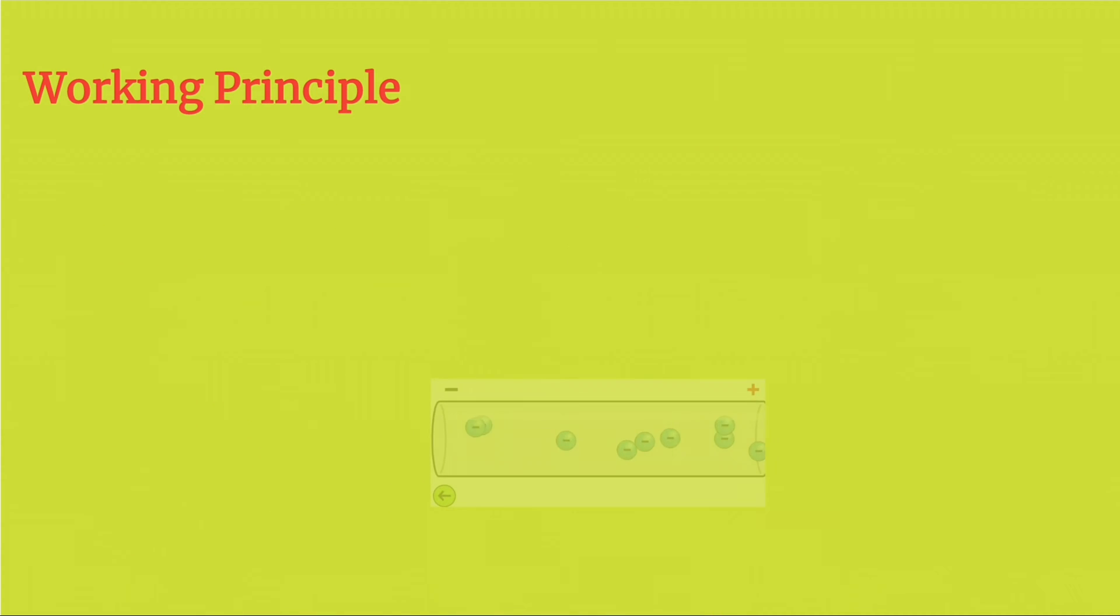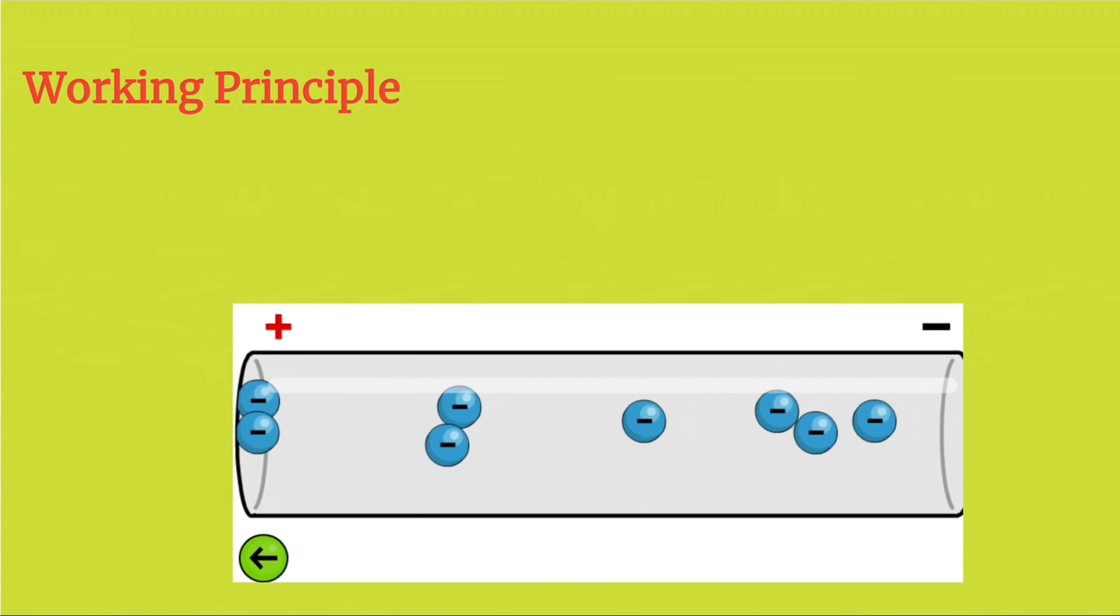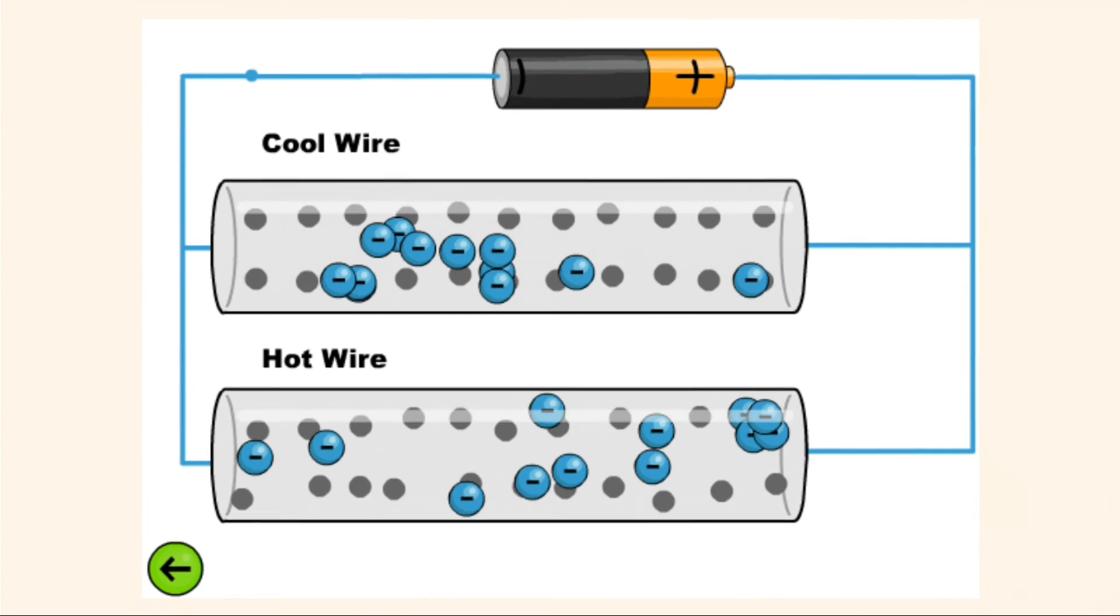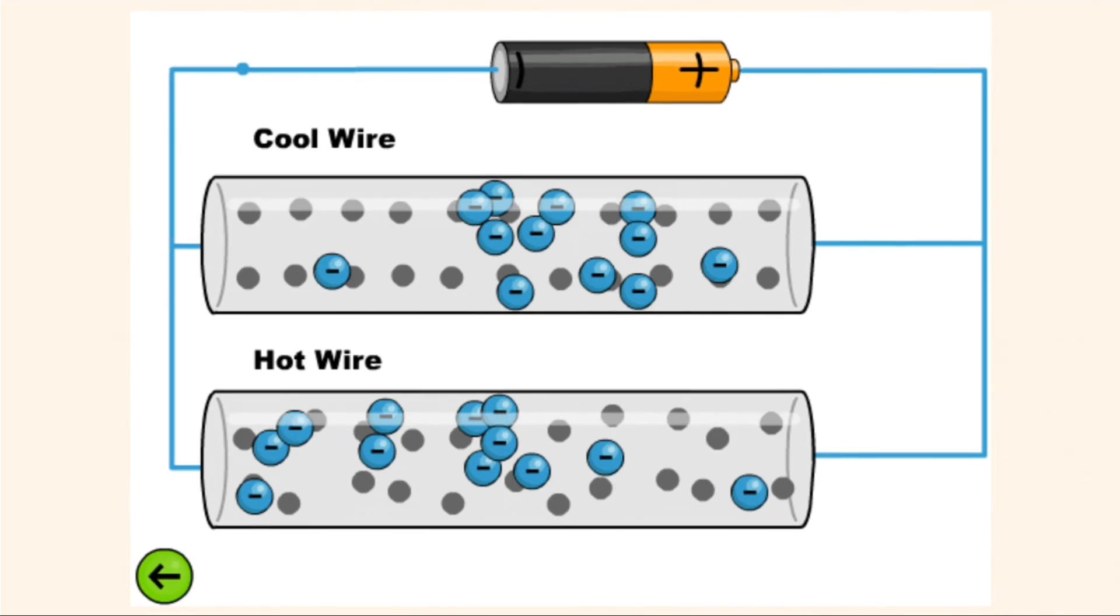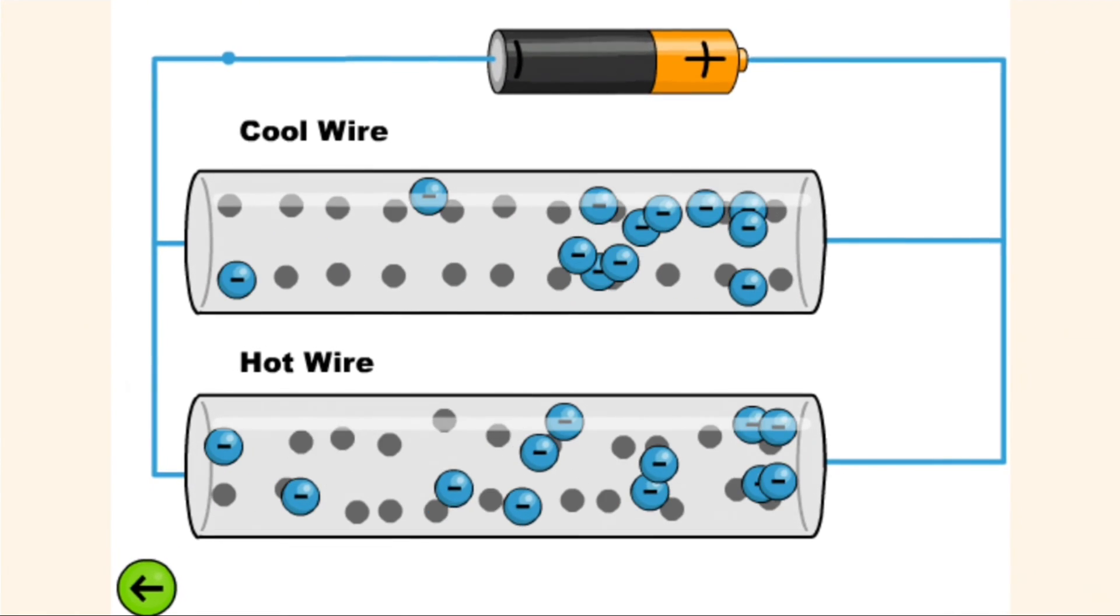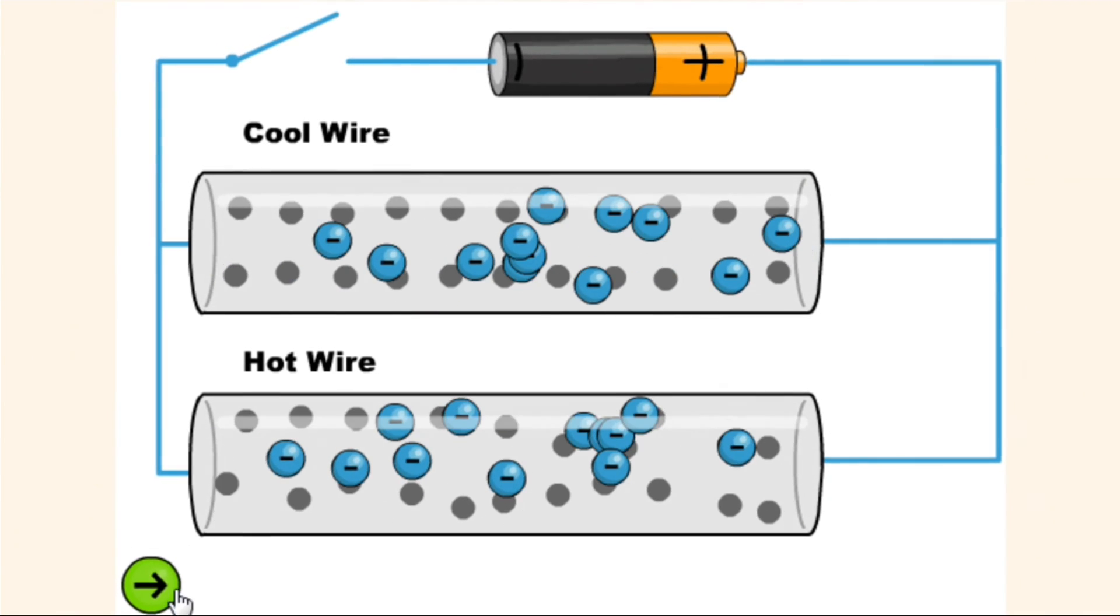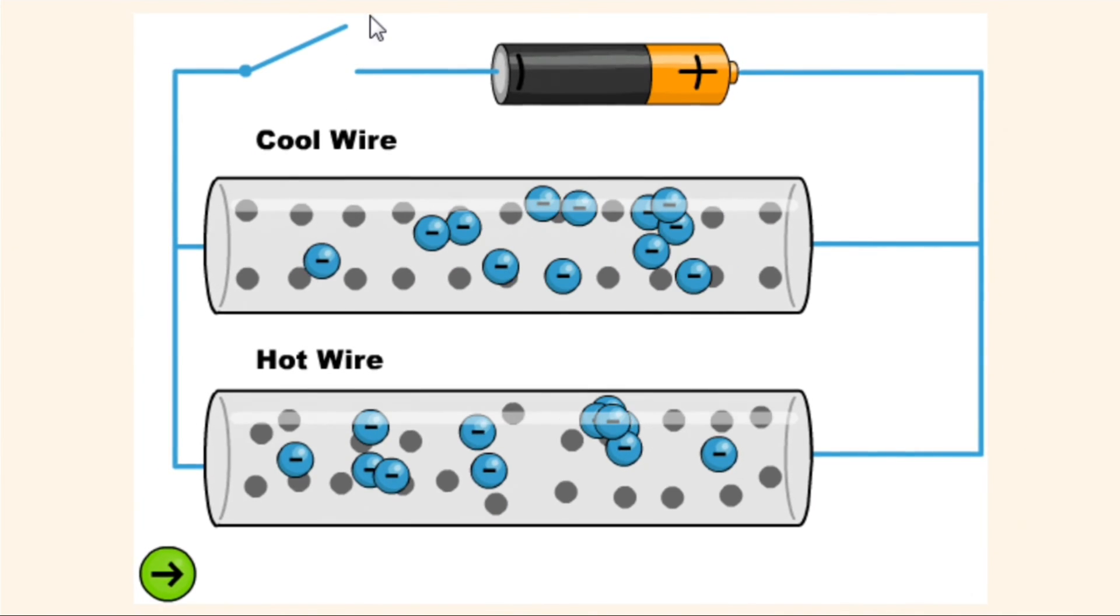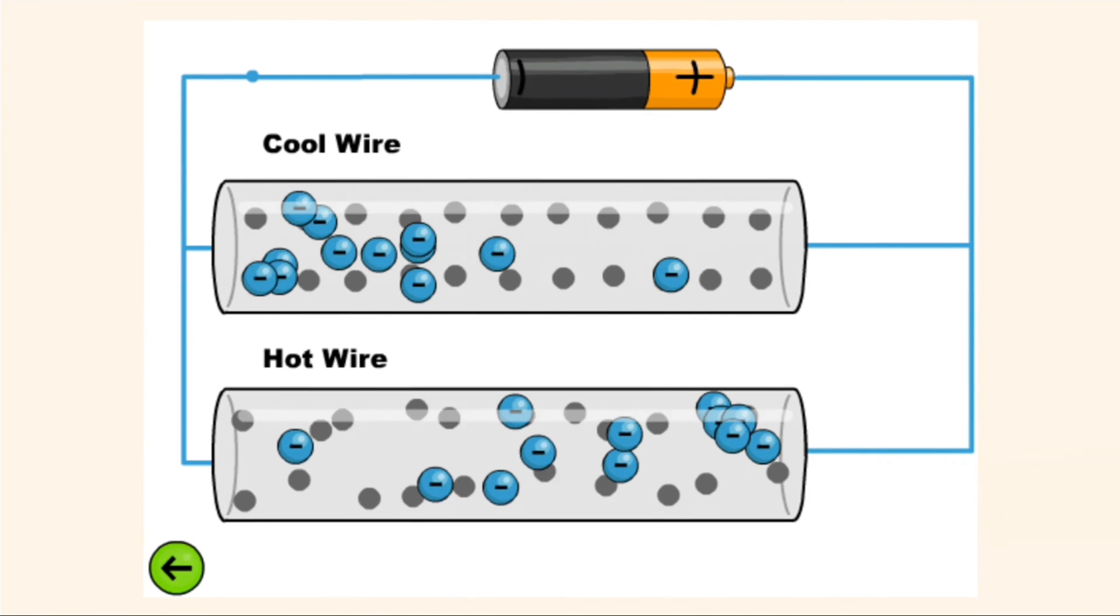Working Principle. Every material has atoms in it and all the atoms have energy due to which they vibrate slightly. When a battery is connected to a conductor, current flows through the conductor. Since the flow of current is due to the flow of electrons, these electrons frequently collide with vibrating atoms of the conductor. These collisions decrease the speed of electrons. This property of a material due to which it opposes the flow of current through it is called resistance.